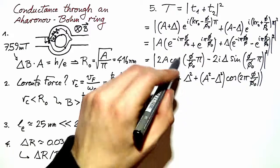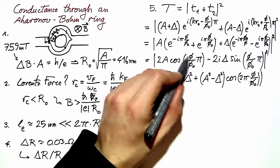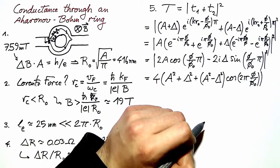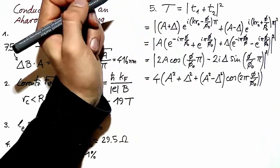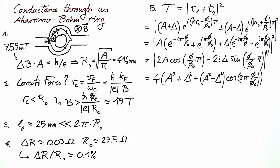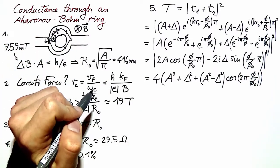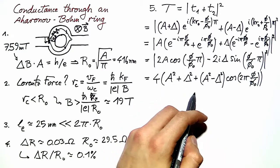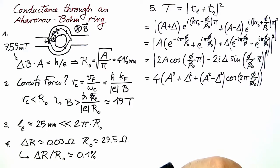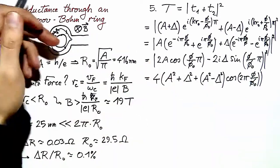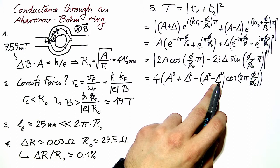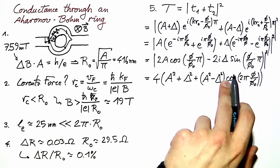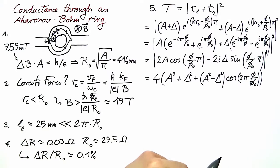Those terms appear because cos²x is 1 plus cos 2x. Now looking at this expression, if we set Δ equal to 0, which means equal partition between the two arms, we have the familiar expression for the Aharonov-Bohm effect where we have a background and this periodic modulation.